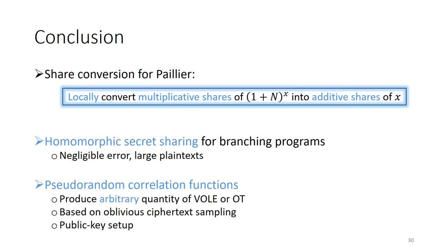The main thing to take away is that we have a very nice technical trick in the form of a share conversion procedure for Paillier encryption, which allows you to locally convert multiplicative shares of a message in the exponent into additive shares of x. This is very powerful: we can use it to build homomorphic secret sharing for branching programs with negligible error and a large plaintext space, and we get new constructions of pseudorandom correlation functions allowing you to produce an arbitrary number of vector OLEs or oblivious transfers. Additionally we have a public key setup procedure allowing Alice and Bob to generate correlated randomness after exchanging just one message each.